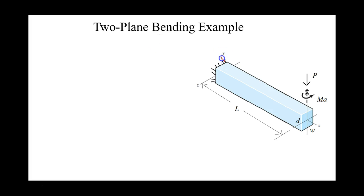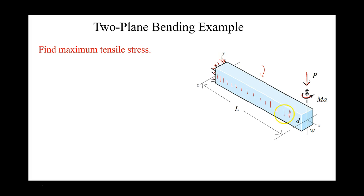Here's a quick example. We have a beam that is fixed at one end. At the far end, we have a downward force P as well as a couple being applied parallel to the y-axis. We want to find the maximum tensile stress. The stress caused by M_a will be tensile on the front face and compressive on the back face. The stress caused by P will be a bending stress — tensile on the top surface — but the maximum stress will be at the support. The location of our maximum tensile stress will be at that point.